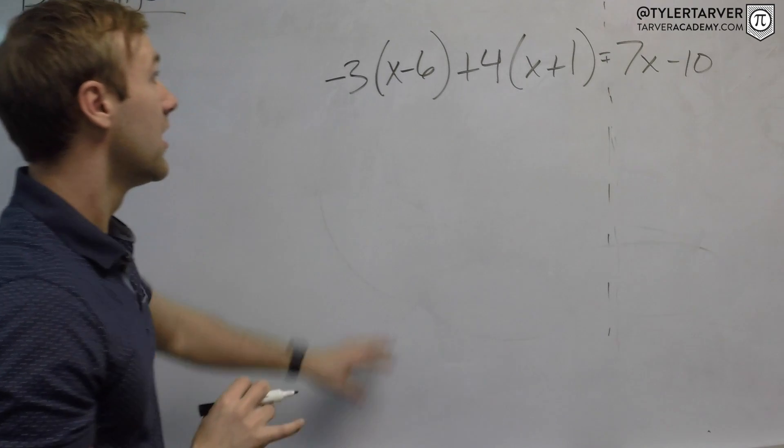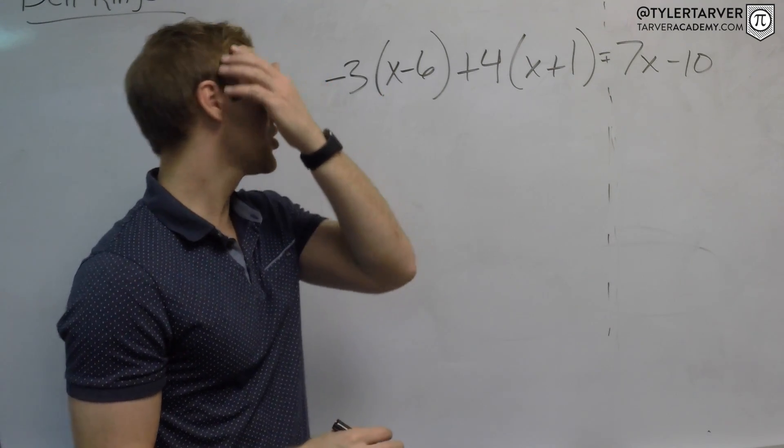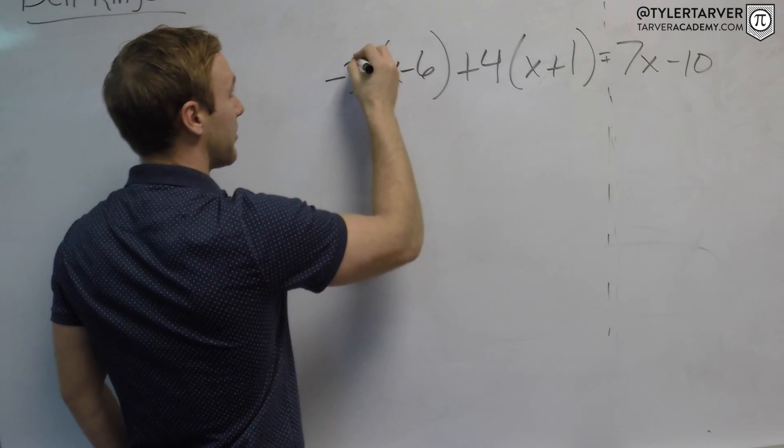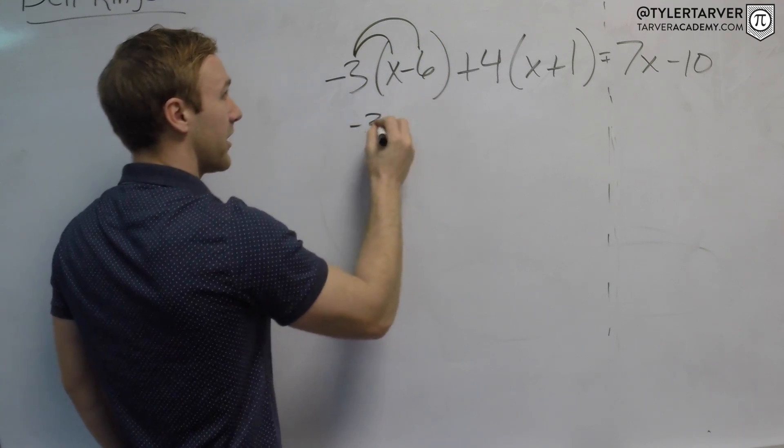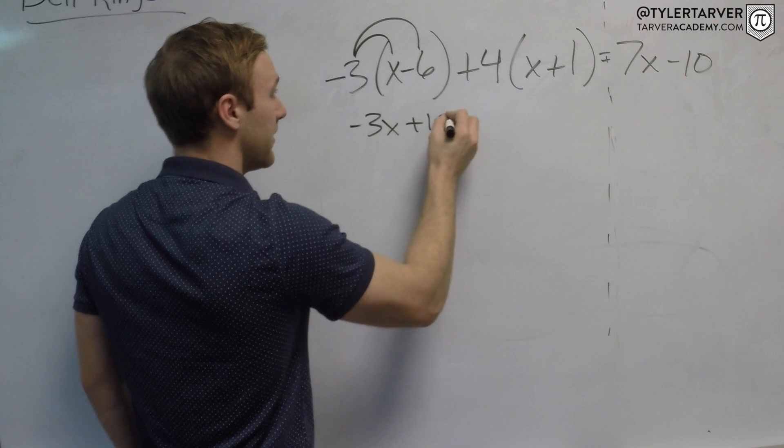So let's take a look at it. First thing we're going to do, arrive, wish, mission, rebute. That's right, distribute. So I'm going to distribute this negative three times everything in the parentheses. There and there. So negative three times x is negative three x. Negative three times negative six is positive 18.